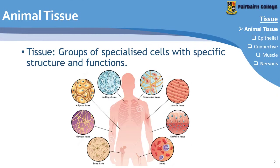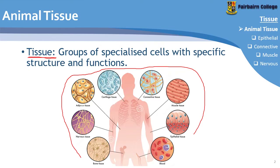So firstly, we're going to look at a definition for tissue again. It's the same definition as for plant tissue: groups of specialized cells with specific structure and functions. The types of tissue we find in animals are different from plants. Here's an example of the tissues we find in animals, and we'll look at all of these different types as we go through.